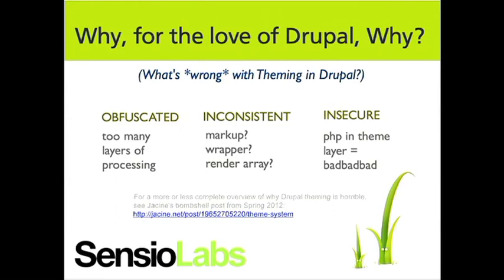There are all these various levels, and even if you install the incredibly buggy and memory-intensive theme developer, it's often difficult to find where various theme functions are coming from. It's incredibly inconsistent — sometimes you're printing, sometimes you're rendering. Who here knows by show of hands when to use markup, when to use a theme wrapper, or when to put it in a render array? It's inconsistent. There are certain rules that apply, but they're very difficult to determine.